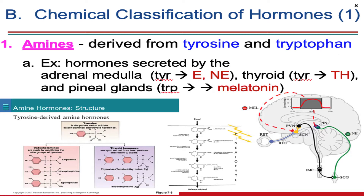This slide conveys a lot of information. First, it tells us that in different tissues, the same amino acids can be converted to alternative forms of active hormones, and that of course depends on the gene activity of that particular tissue. So in the adrenal medulla, tyrosine is converted to epinephrine and norepinephrine. In the thyroid gland, the same tyrosine is converted to thyroid hormone, and likewise in the pineal gland, tryptophan is converted through a biochemical pathway into melatonin.